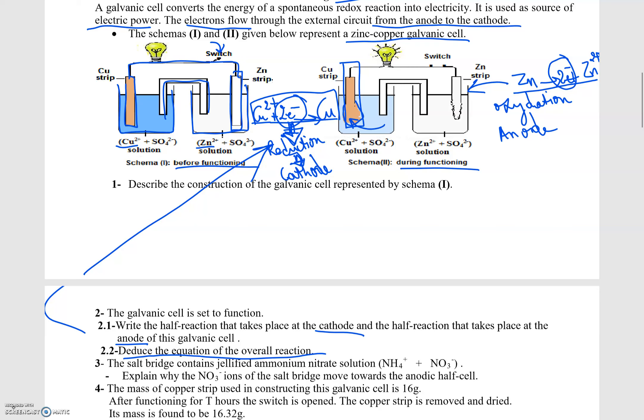However, here both are exchanging two electrons, so we just add them and the full reaction is Zn + Cu²⁺ → Zn²⁺ + Cu.